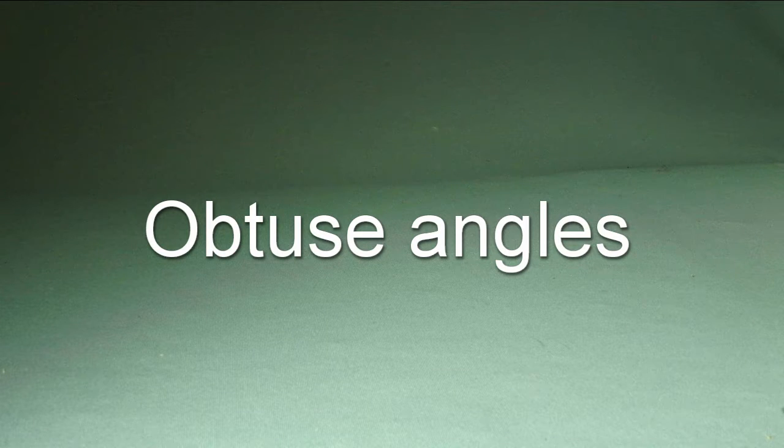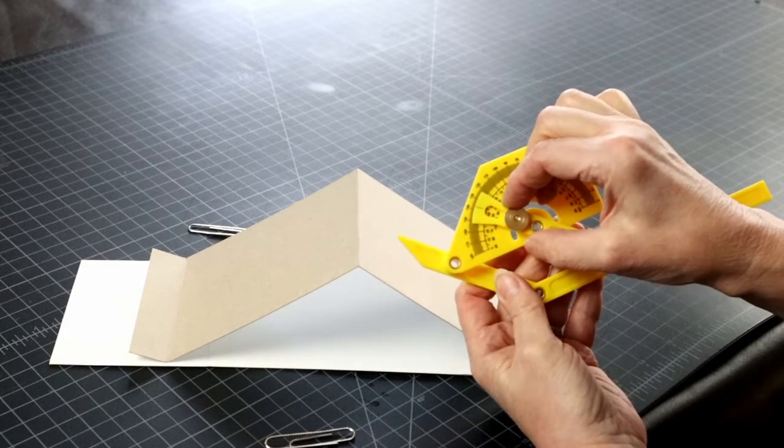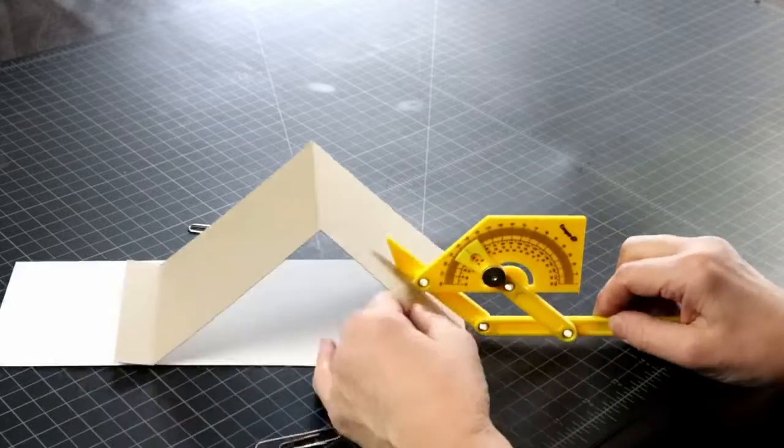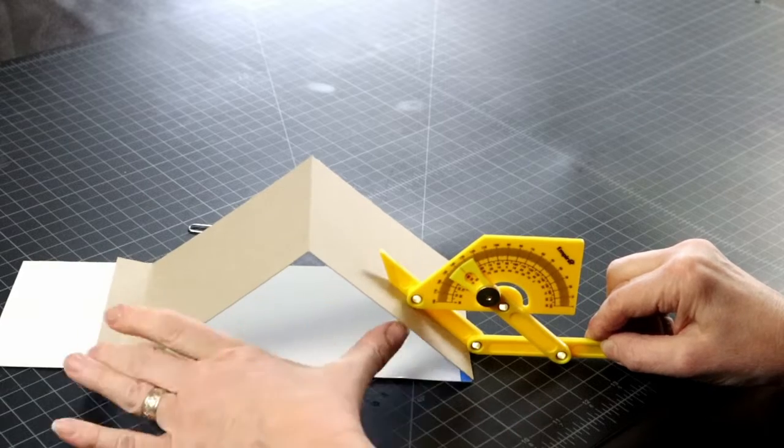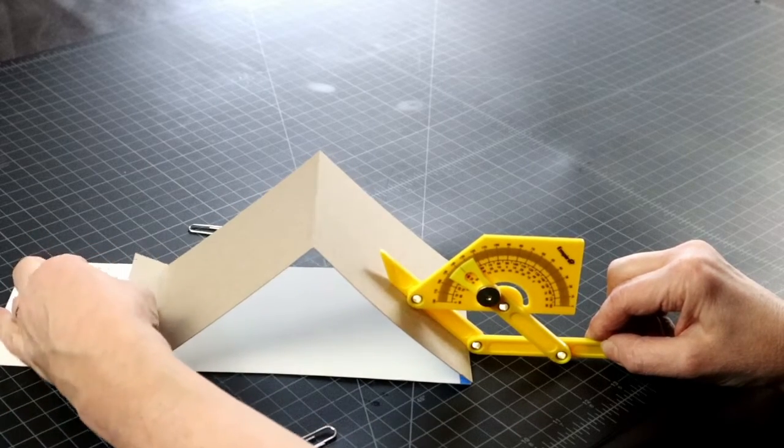The angles larger than 90 degrees are a bit easier to make. So let's start with those. Let's set up the angle support at 138 degrees for icosahedron for example. Fix it in place.